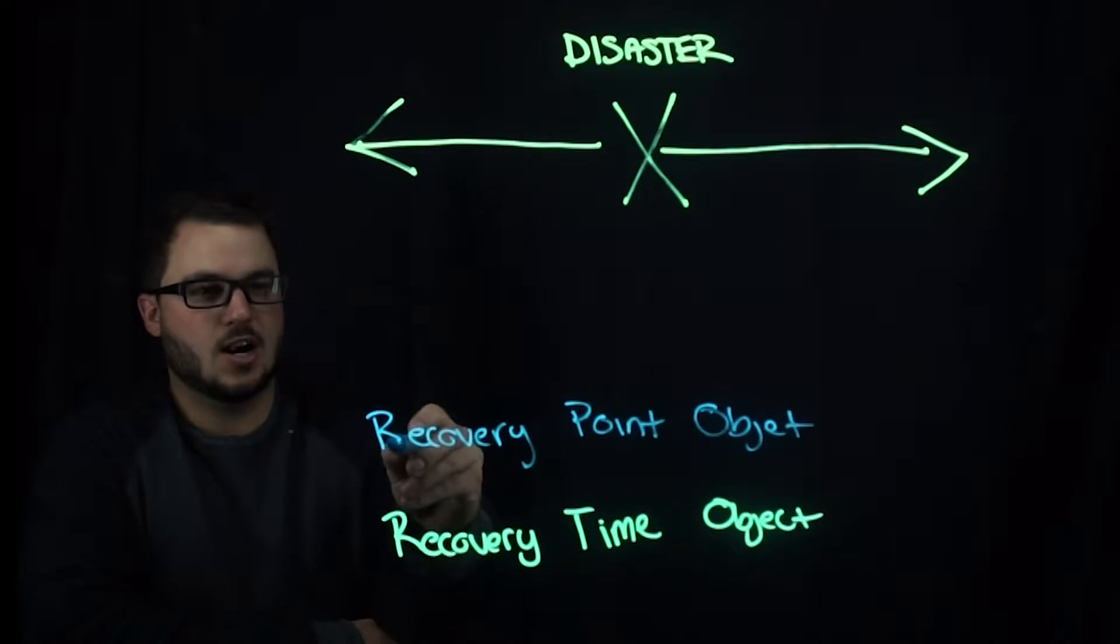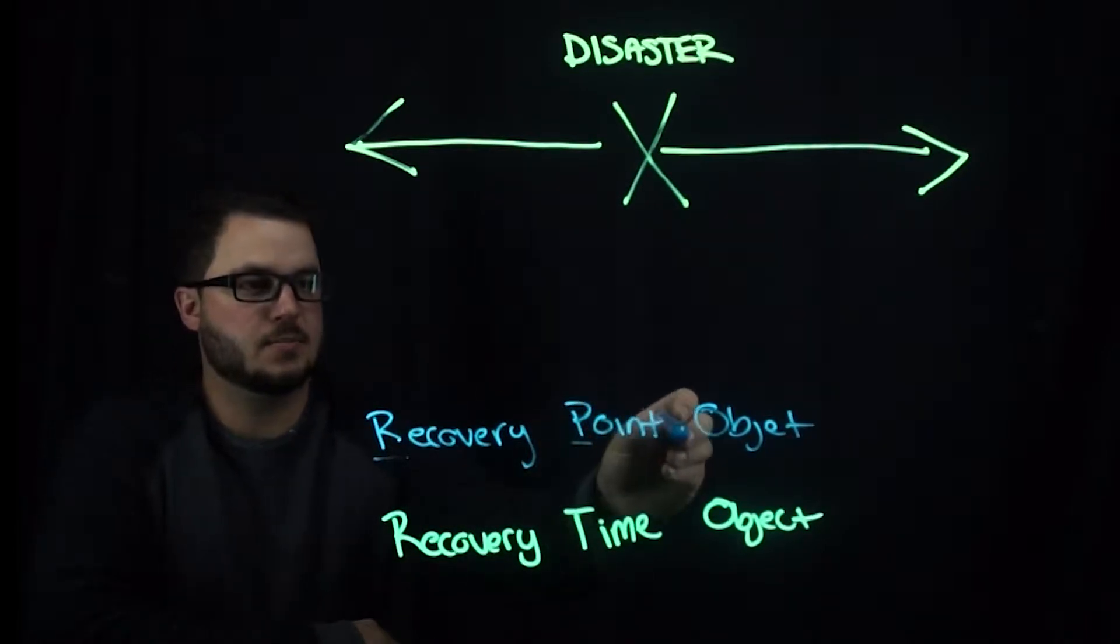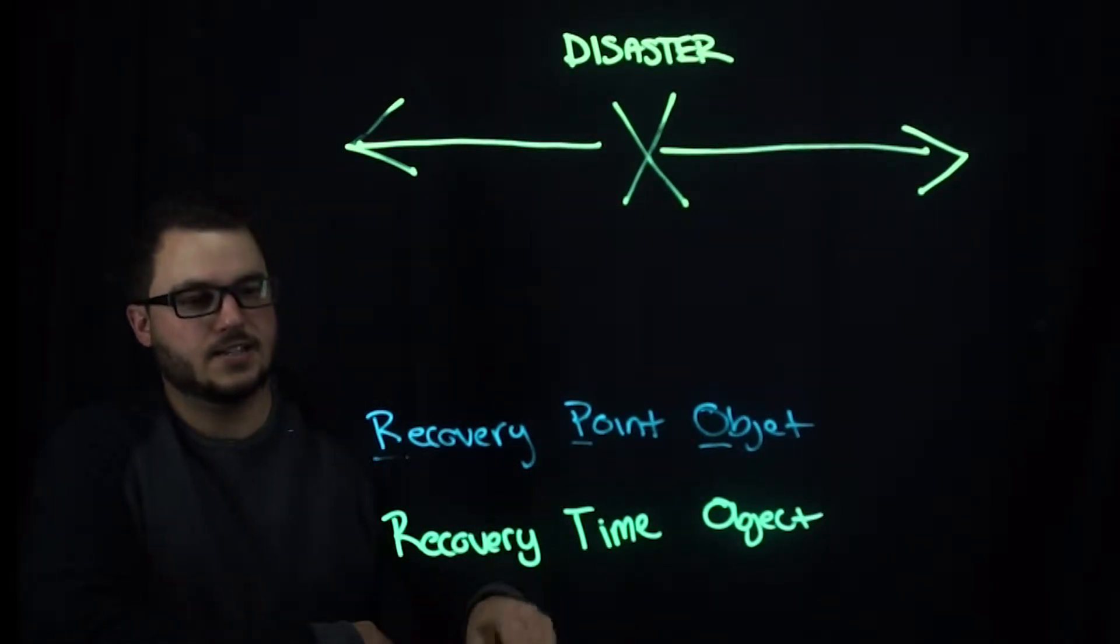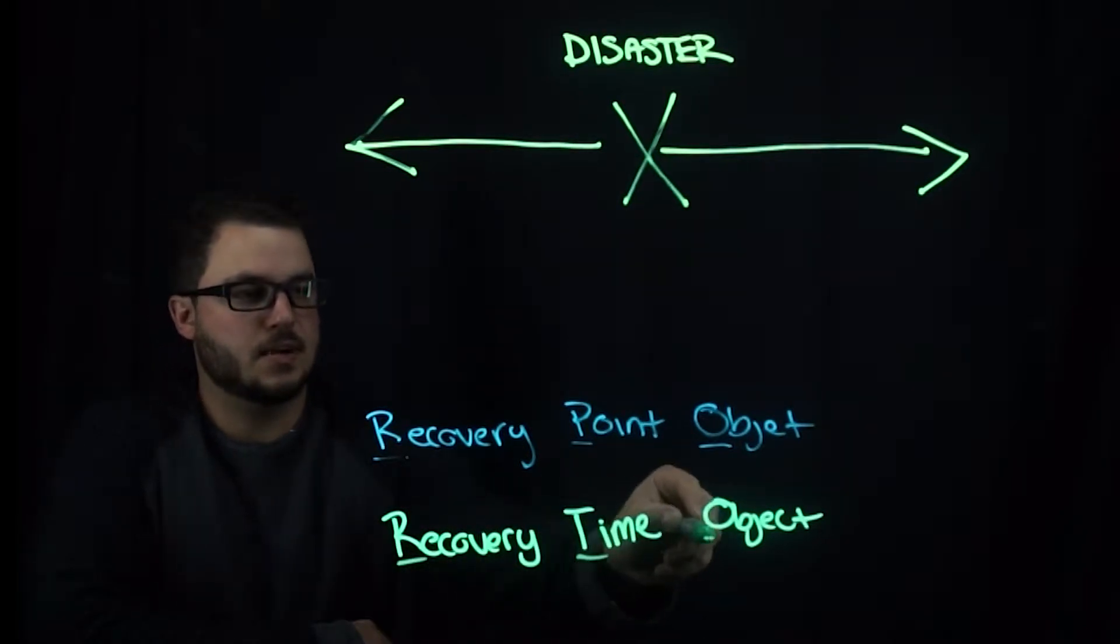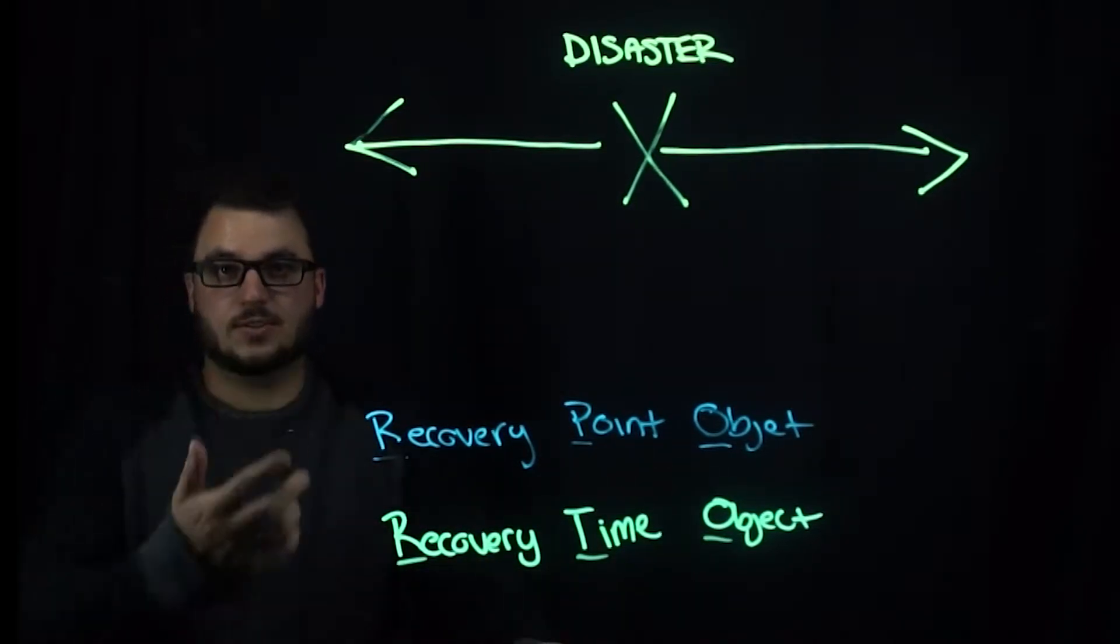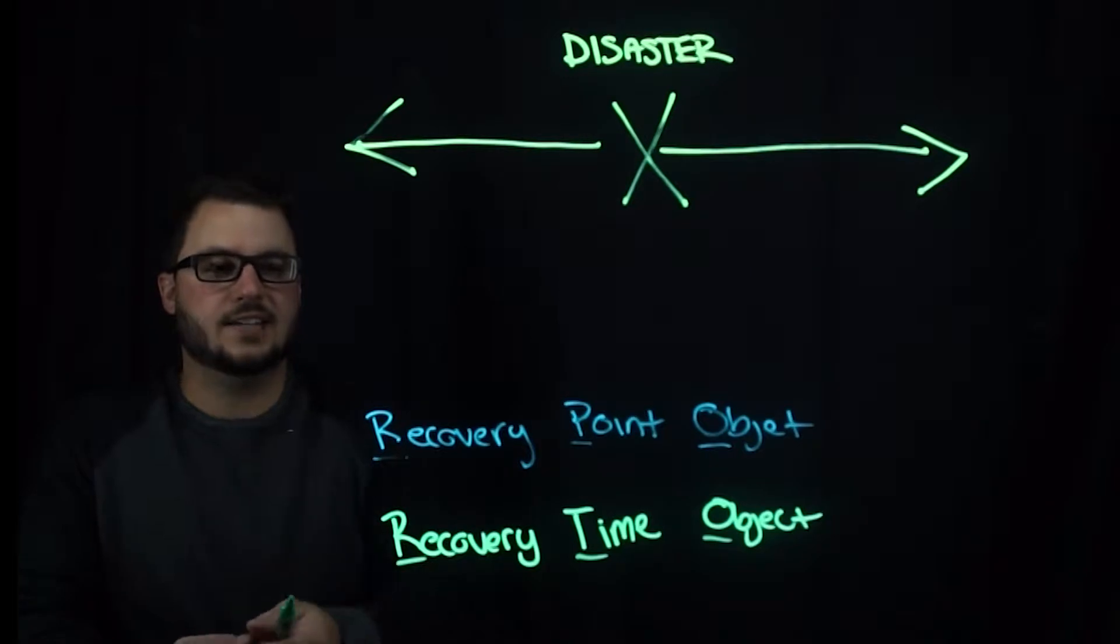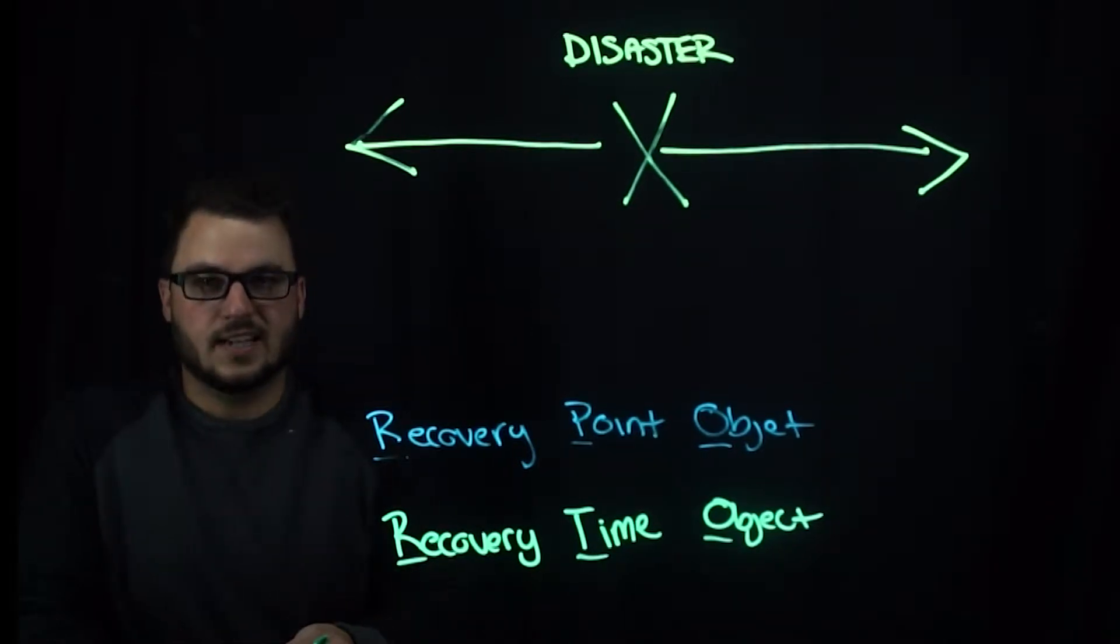RPO, R-P-O, Recovery Point Object, and RTO, Recovery Time Object. They both relate to a disaster timeline and the disaster recovery plan that covers it.